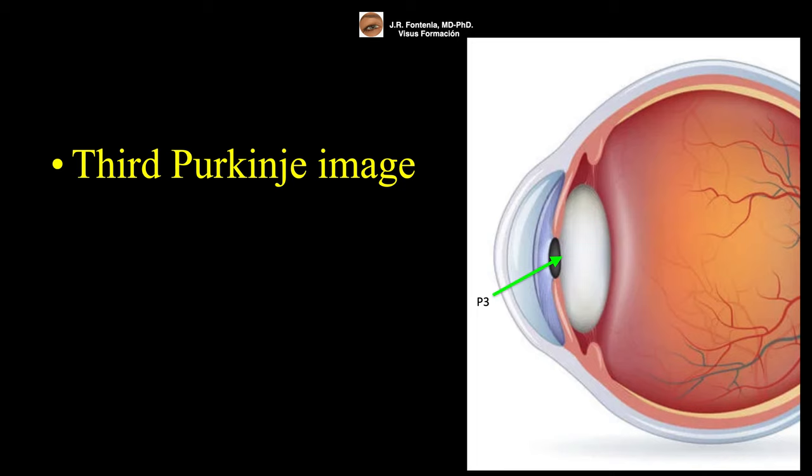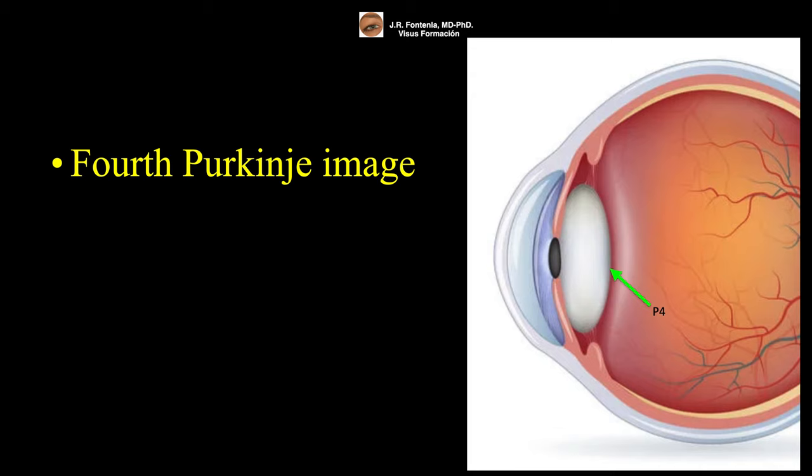And the fourth Purkinje image is the reflection from the inner surface of the lens, and is also referred to as the lens posterior reflection. Unlike the others, the fourth Purkinje image is an inverted image.